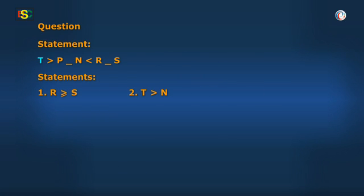The given statement is: T greater than P, blank, N; N less than R, blank, S. We have to fit signs in the blanks such that R greater than or equal to S and T greater than N will hold true. Since there is no element between R and S, we first solve the sign between R and S. The conclusion R greater than or equal to S must hold true, so 'greater than or equal to' is the choice for blank 2. This means the correct option is between options 3 and 4.